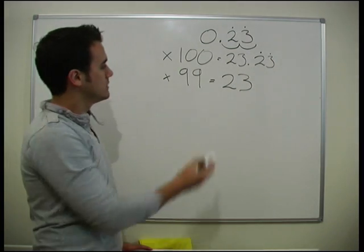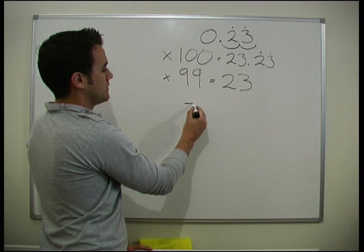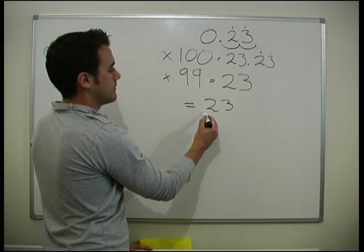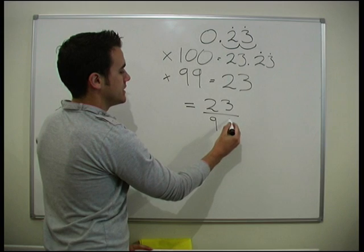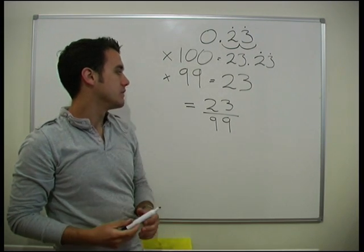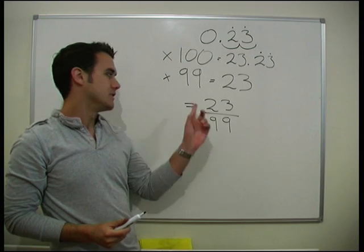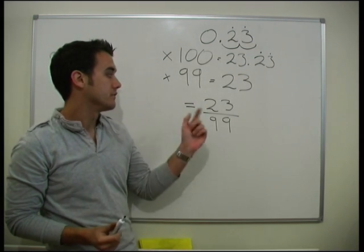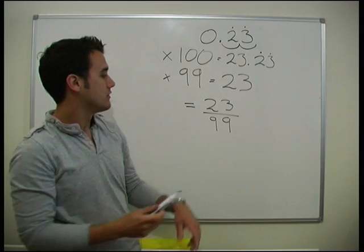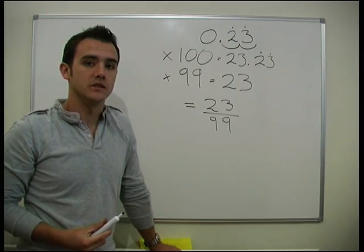So again, what does 99x equal? It's going to equal 23. So we're going to see our fraction: it's going to be 23 over 99. Does anything go into both of those? 23 is a prime number, so nothing is going to divide into 23. So that gives us our final answer: 23 over 99.